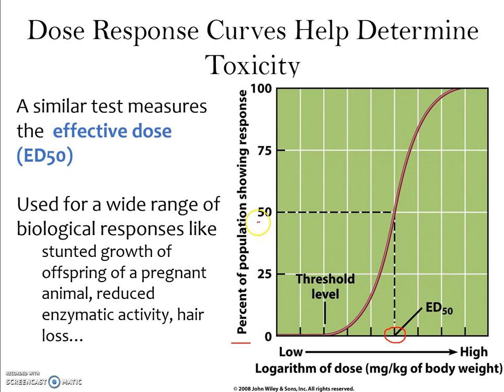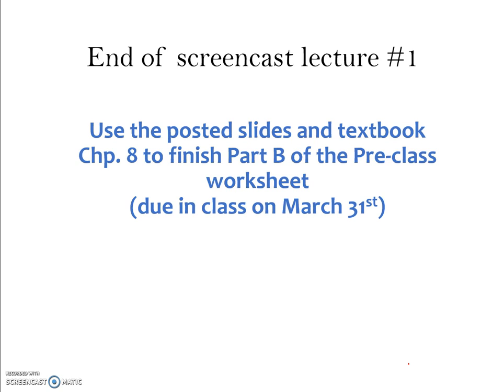The dose here is measured in milligrams per kilogram of body weight — how much toxin is given relative to how big the individual is. The same dose on a horse would have a very different effect than on a rabbit, so it's important to account for organism size when thinking about effective or lethal doses. Use the posted slides and your textbook to finish part B of the pre-class worksheet, due at the beginning of class, and in class we'll follow up with a case study on another persistent organic pollutant.